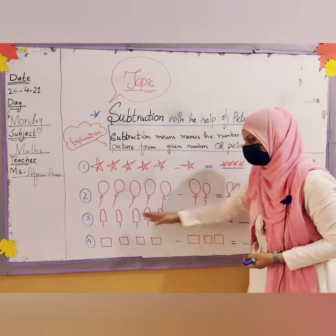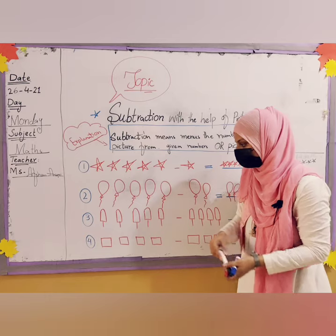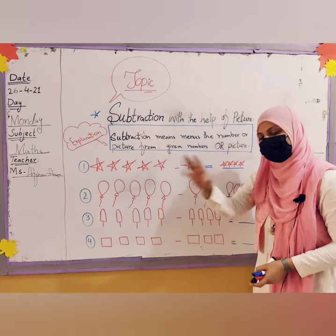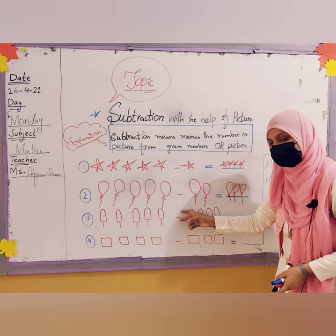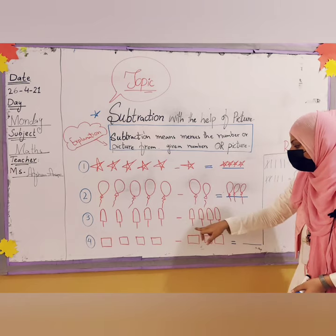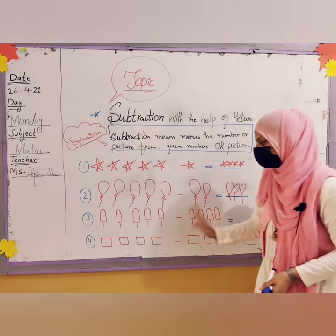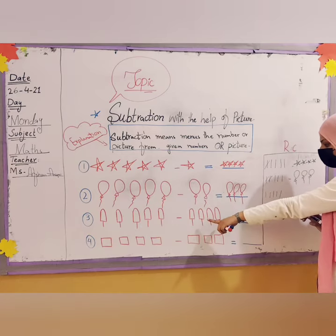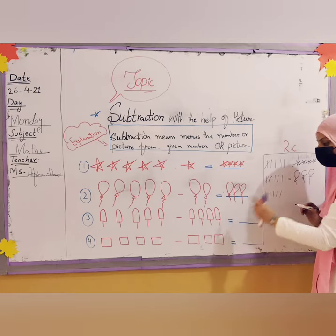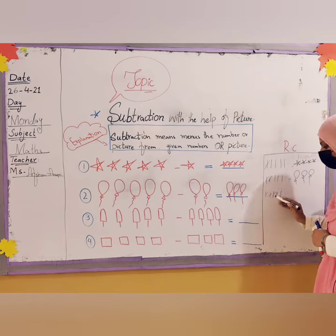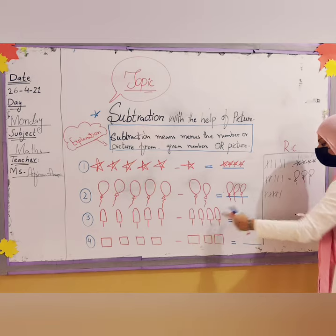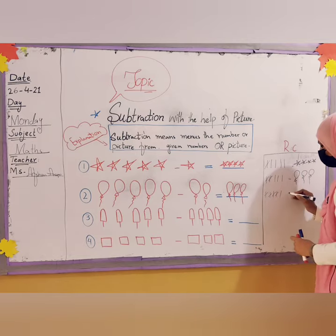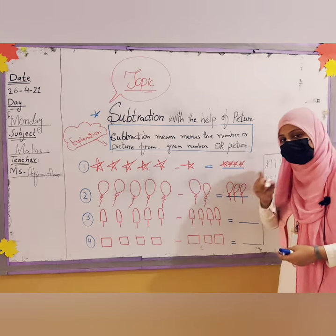Point number three: I have drawn five ice creams — one, two, three, four, five. The sign here is minus, the subtraction sign. After it, count: one, two, three, four — so you minus four ice creams from five. Cross out one, two, three, four in the rough column — only one ice cream will remain.